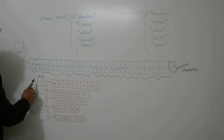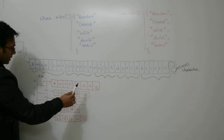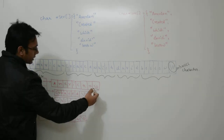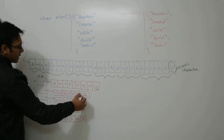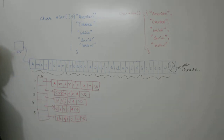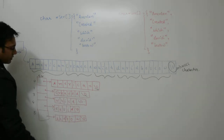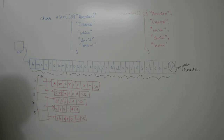For the first index location we have 'American', after that we have a null character. Then we have 'created', after that we have a null character. Then we have 'which', after that we have a null character. Then we have 'Debit', after that we have a null character. Then we have 'desktop', after that we have a null character.